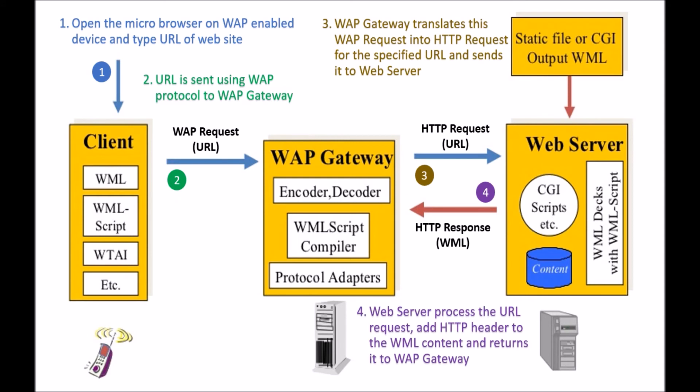Step four: the web server processes the URL request, adds an HTTP header to the WML content, and returns it to the WAP gateway. The result — WML content — is wrapped with an HTTP header, and this HTTP response containing WML content is passed on to the WAP gateway.